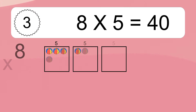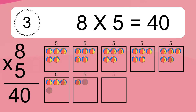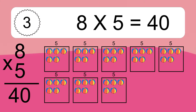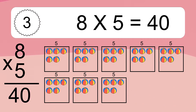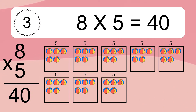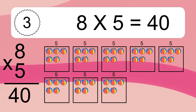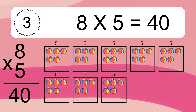8 times 5 equals 40. We have 8 boxes, and each box has 5 colorful balls inside. If you count all the balls in all the boxes together, you will have 8 times 5 balls. This equals 40 balls.